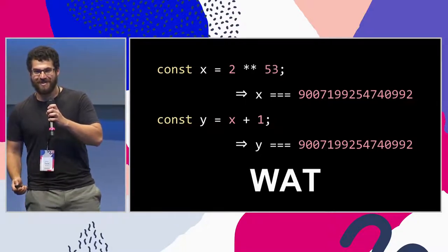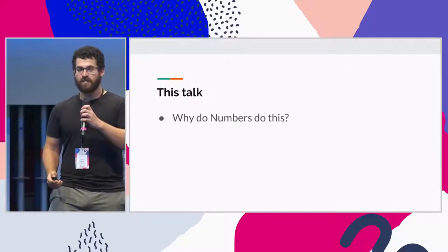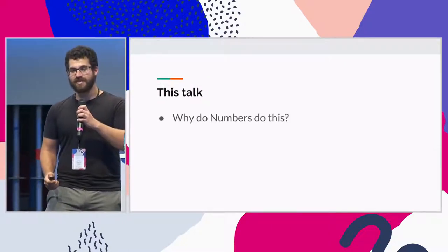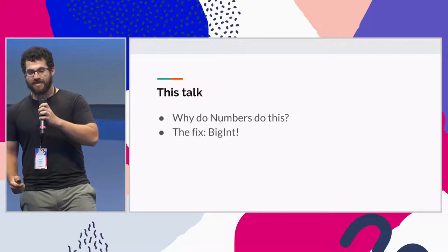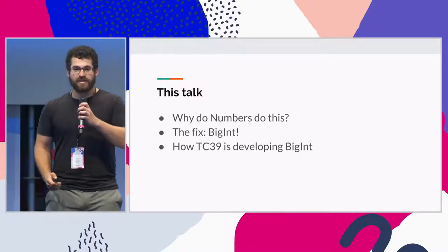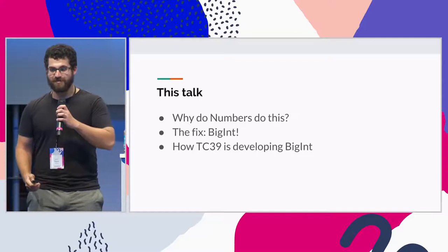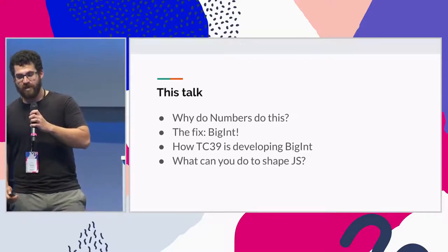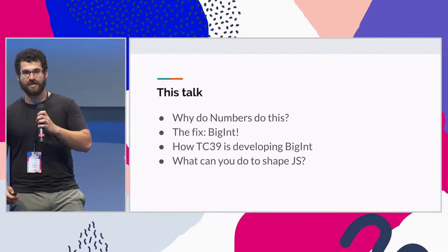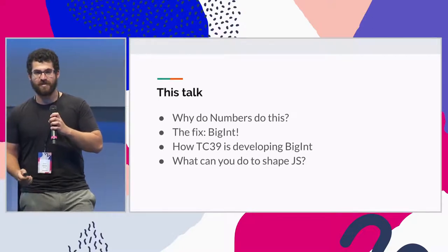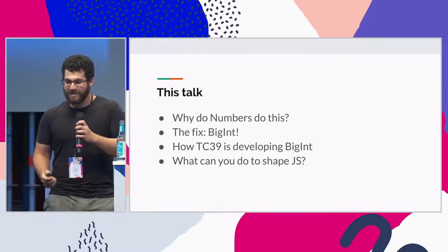What? What's going on? So in this talk, I'll tell you about why numbers do this, how we can fix this using BigInt, how TC39 has been developing BigInt in partnership with the JavaScript community, and how you can get involved to shape the next version of JavaScript. I really want your help in all of this. We can't do it without you.